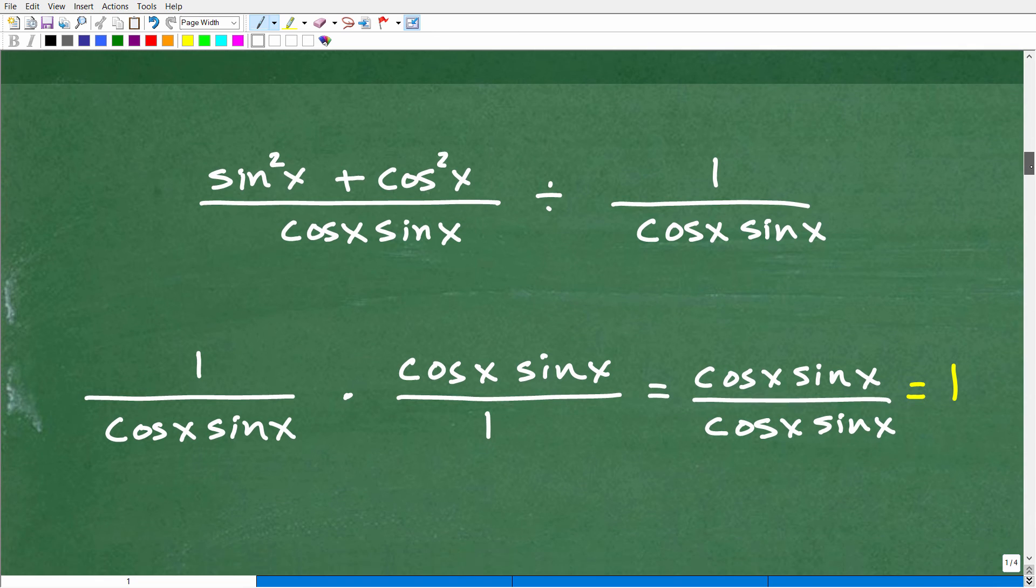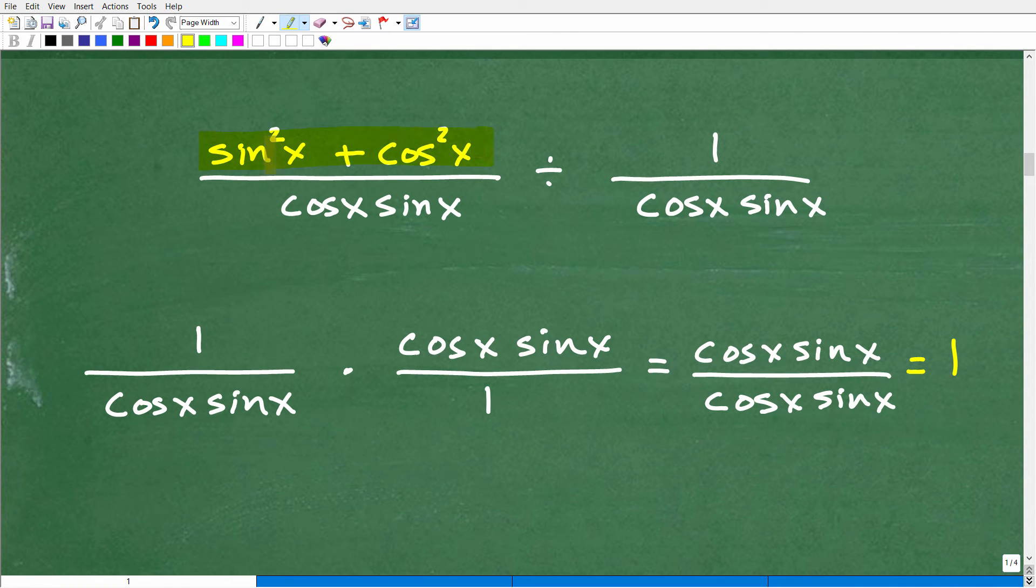So, at this point, you kind of see the setup here. Sine squared x plus cosine squared x is going to be equal to one. So, this is going to be one over cosine x sine x. Because I just used this fundamental identity to replace. We know that sine squared x plus cosine squared x is equal to one. Now, this is division, but we're going to multiply, turn this into multiplication, and we're going to flip this. So, here is the reciprocal, one over cosine x sine x.